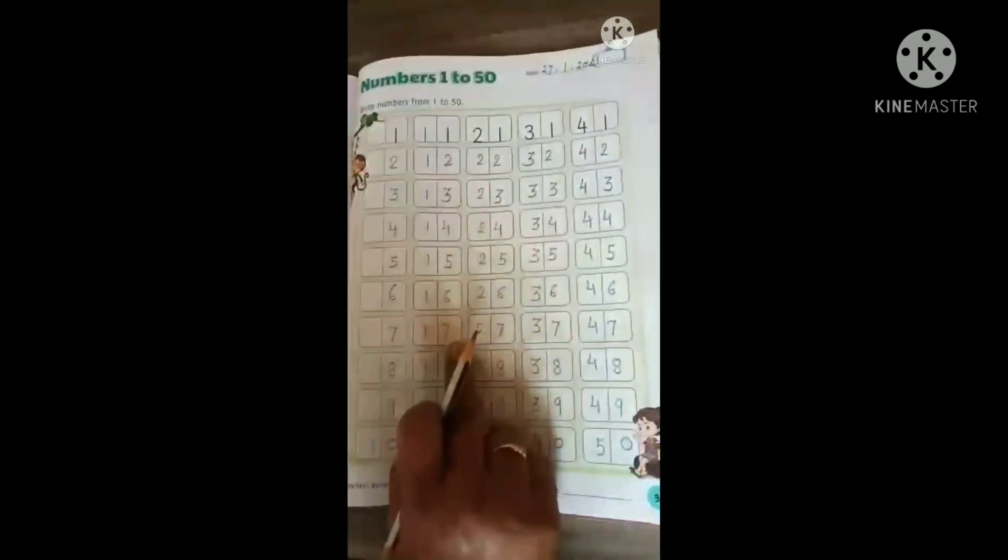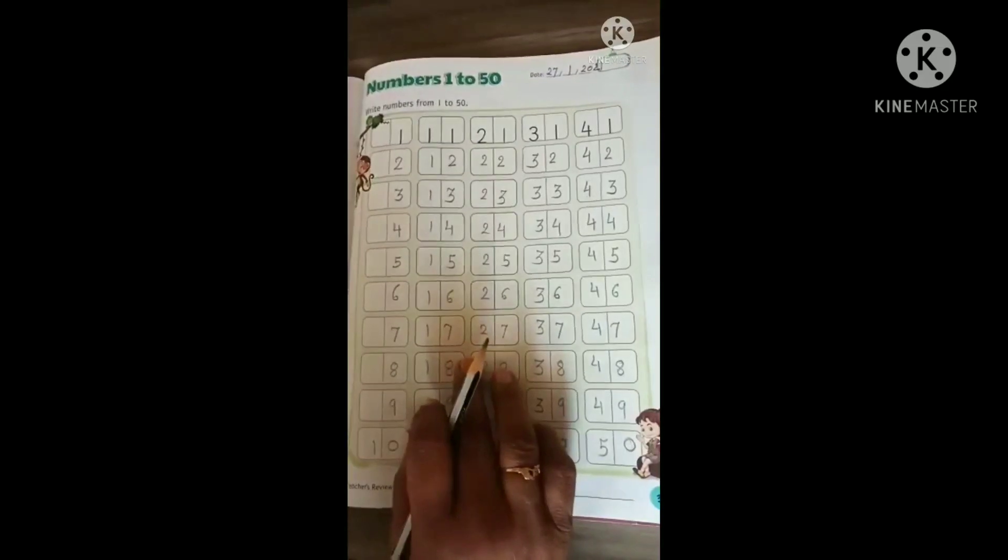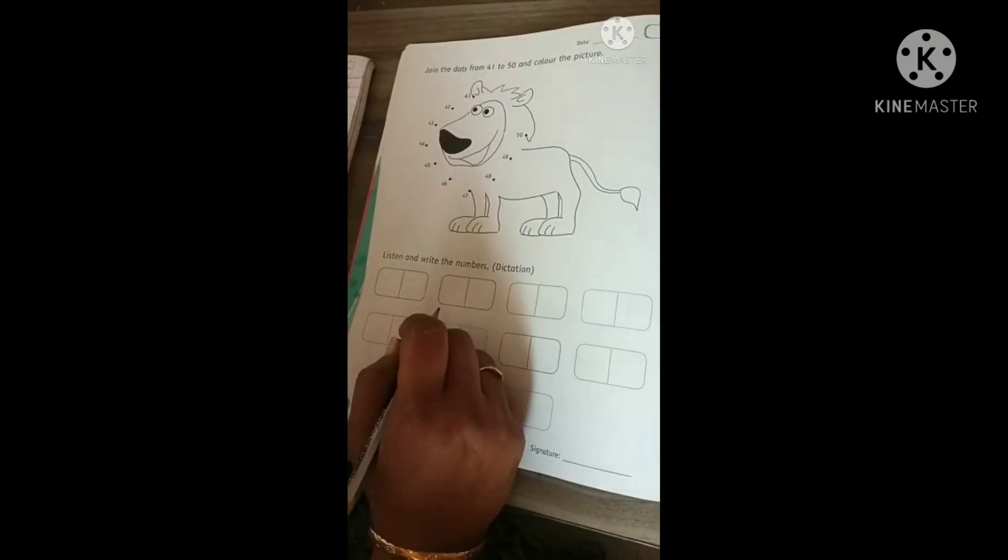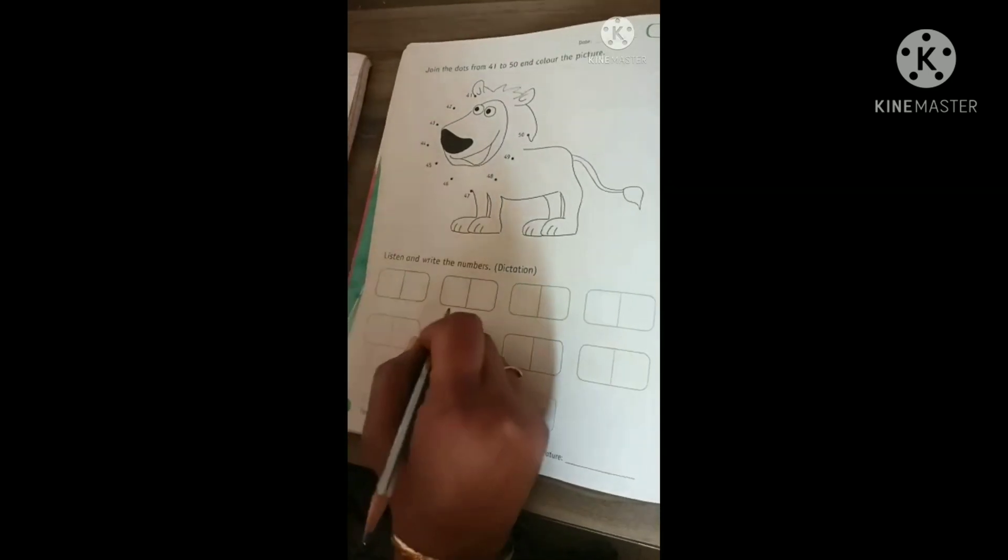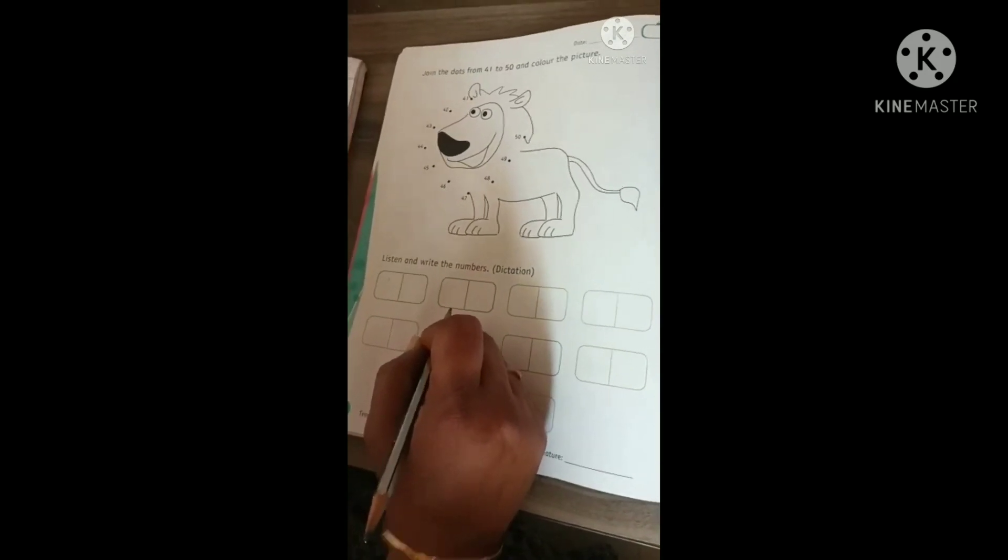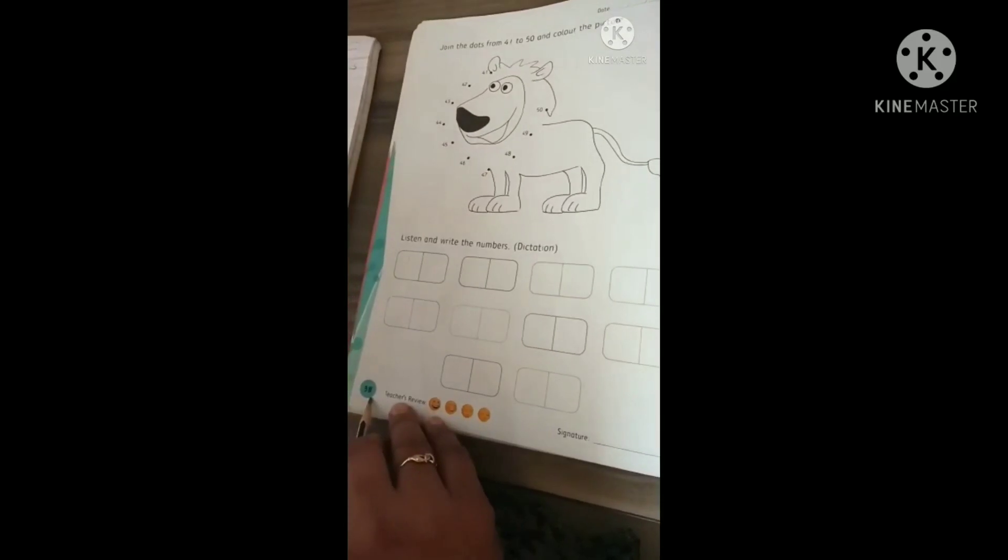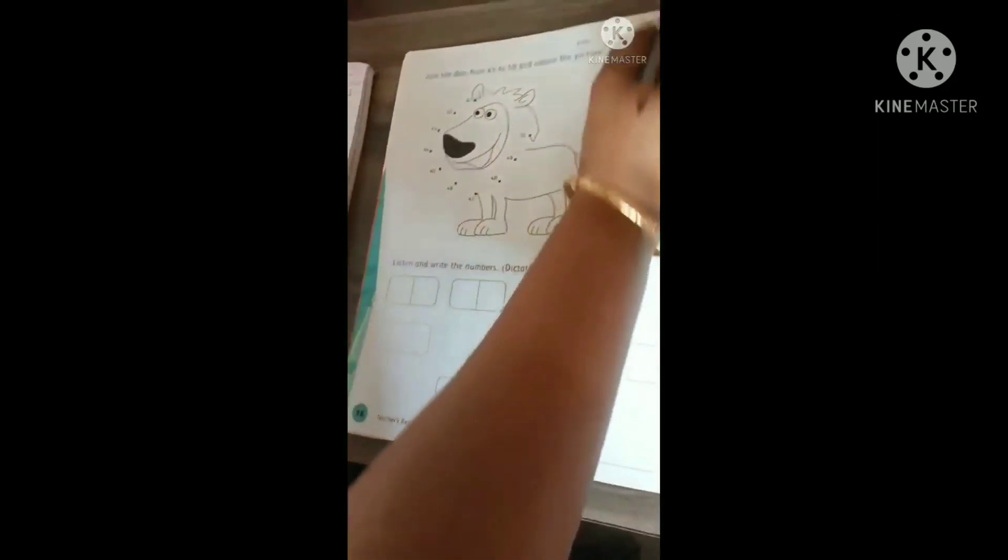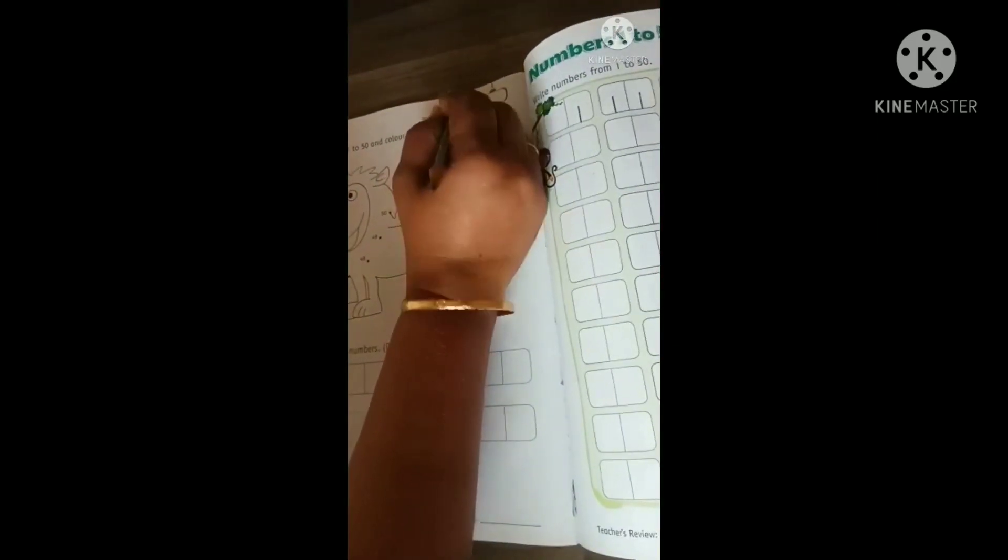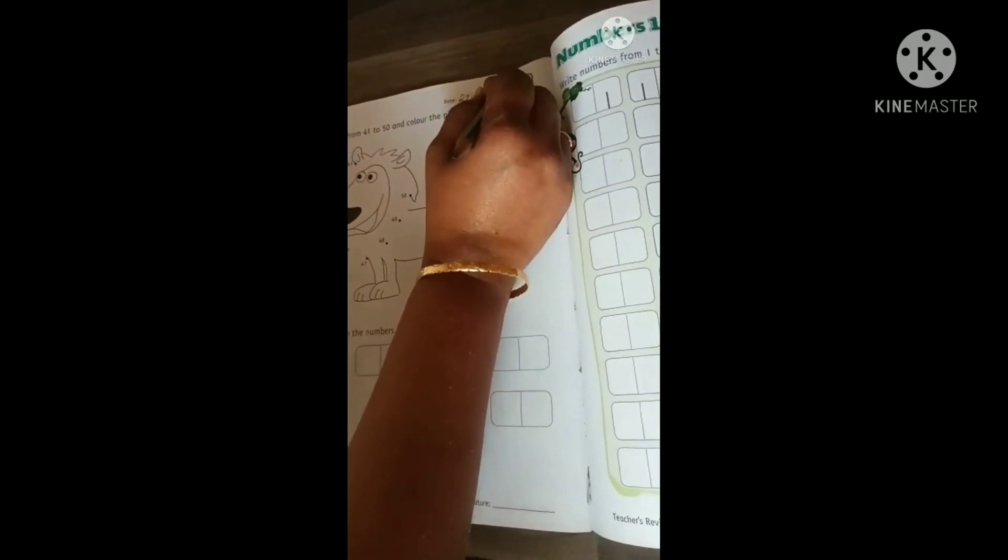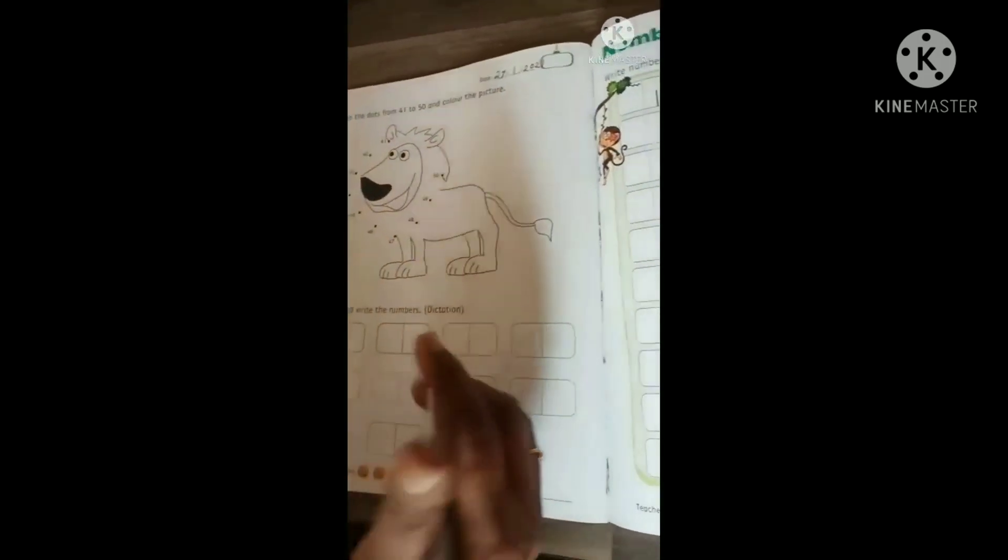Do practice at home. 1 to 50 numbers. Thank you. Bye-bye. Hello kids. Jai Swaminarayan. Good morning. Book number 7. Page number 38. First write down today's date. 27, January 2021.